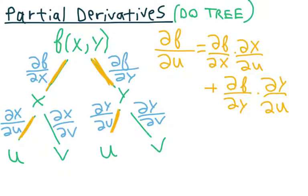For partial derivatives, the trick is you want to do something I like to call the tree. You're going to generally have a function, let's say in terms of x and y's, and then you're going to be given x and y in terms of u's and v's. And they're going to ask you to find ∂f/∂u or ∂f/∂v. What you want to do is draw this tree and break it down.